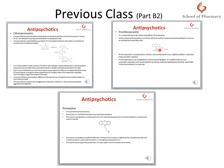Prochlorperazine is used as an antiemetic drug and also in schizophrenia patients, and to control mania, involution psychosis, and senile psychosis. Chromazine, which is also a phenothiazine derivative, is used as an antipsychotic drug and also controls nausea and vomiting.